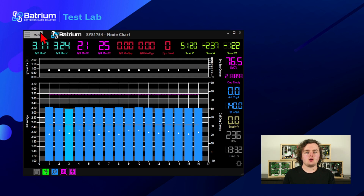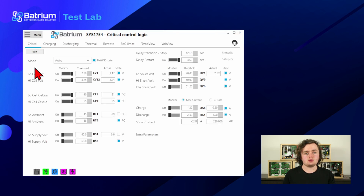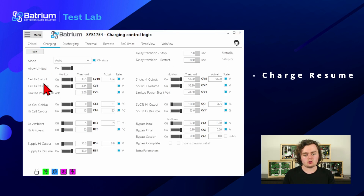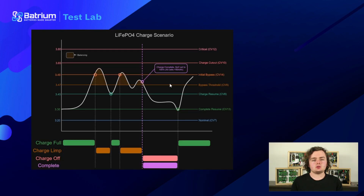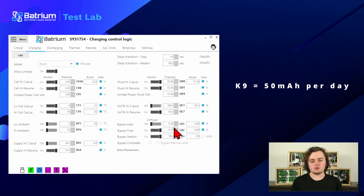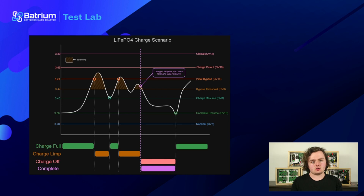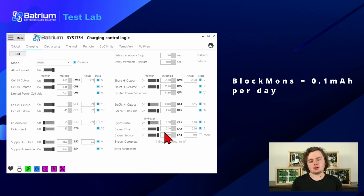We've slowed down, voltages are coming down, and the charge stays slow until we hit the charge resume threshold. Bypass complete is reached when we've done enough accumulated balancing on all cells — that's 50 milliamp hours, which you can configure, and that's per day or per cycle. For block mons, if all cell monitors have hit 0.1 amps at some point in the day, that counts too.